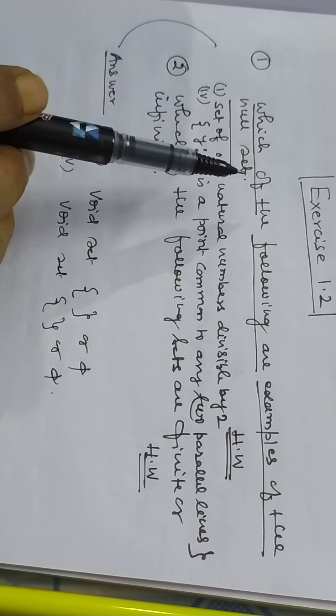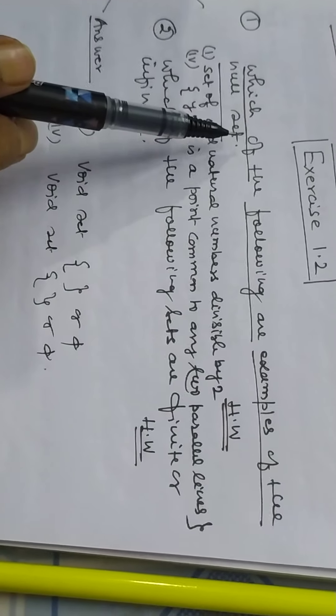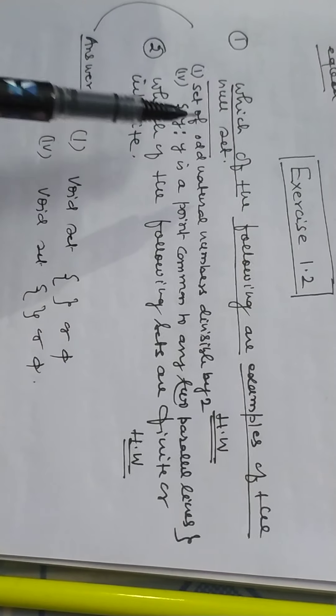Let us start with the problems of exercise one point. Which of the following are examples of the null set?